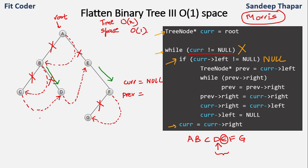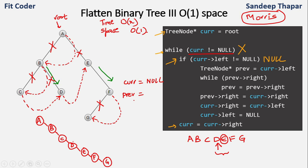Redrawn: root A → B → C → D → E → F → G via right pointers, with all left pointers null. The time complexity is O(n) and the space complexity is O(1), making this quite an efficient method to flatten the binary tree.